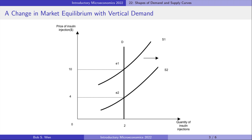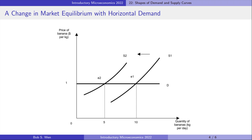What about if the demand curve is horizontal? The new equilibrium quantity is 5 kg per day. The shift of the supply curve does not change the equilibrium price — it only changes the equilibrium quantity.